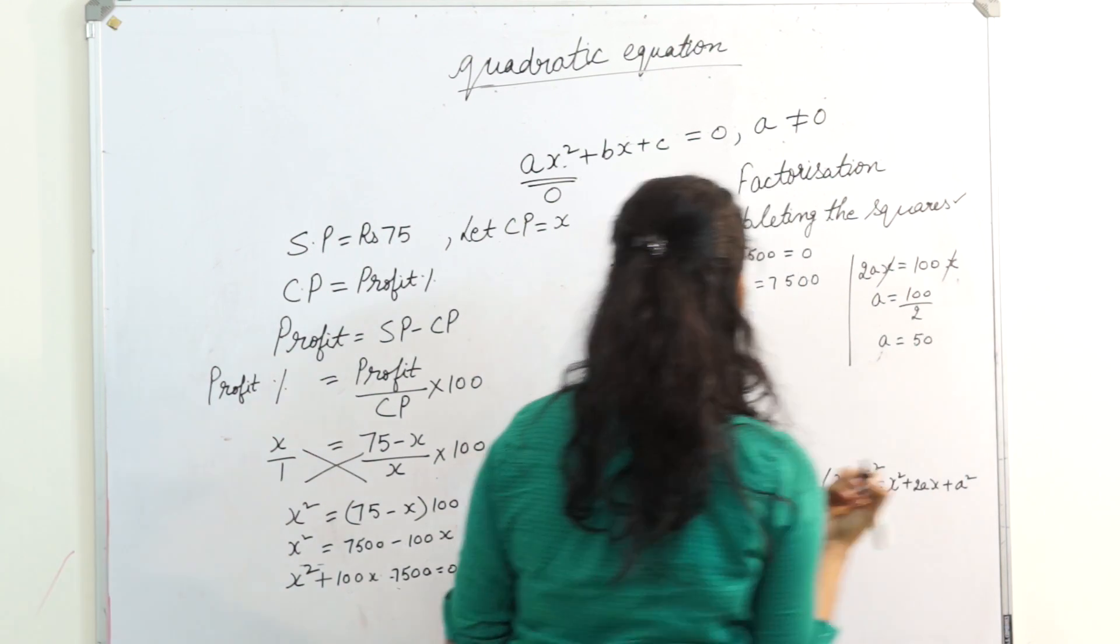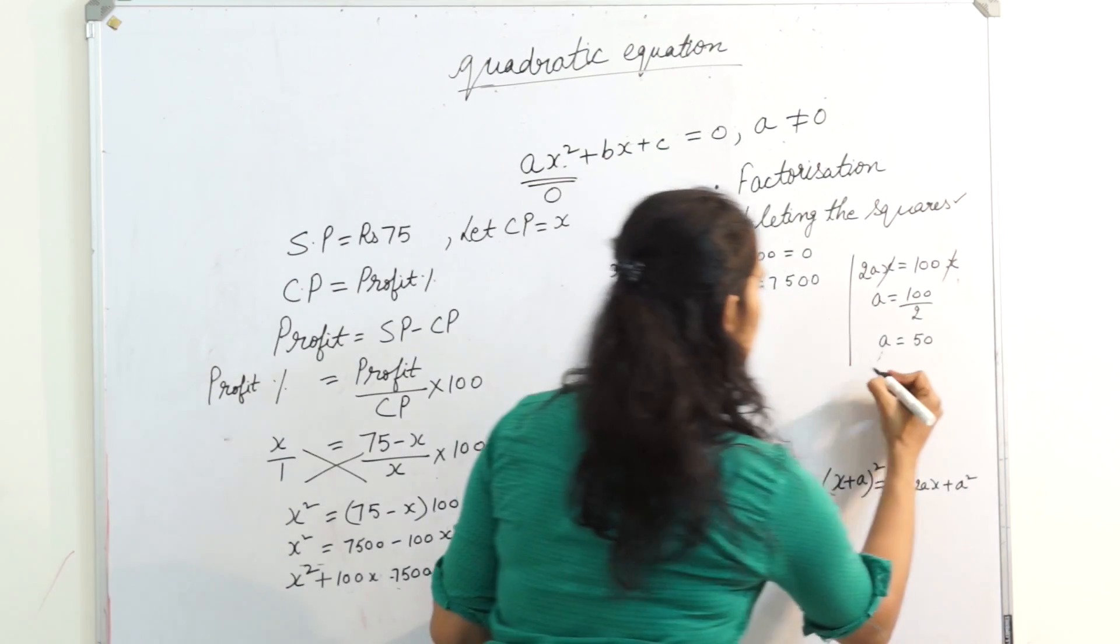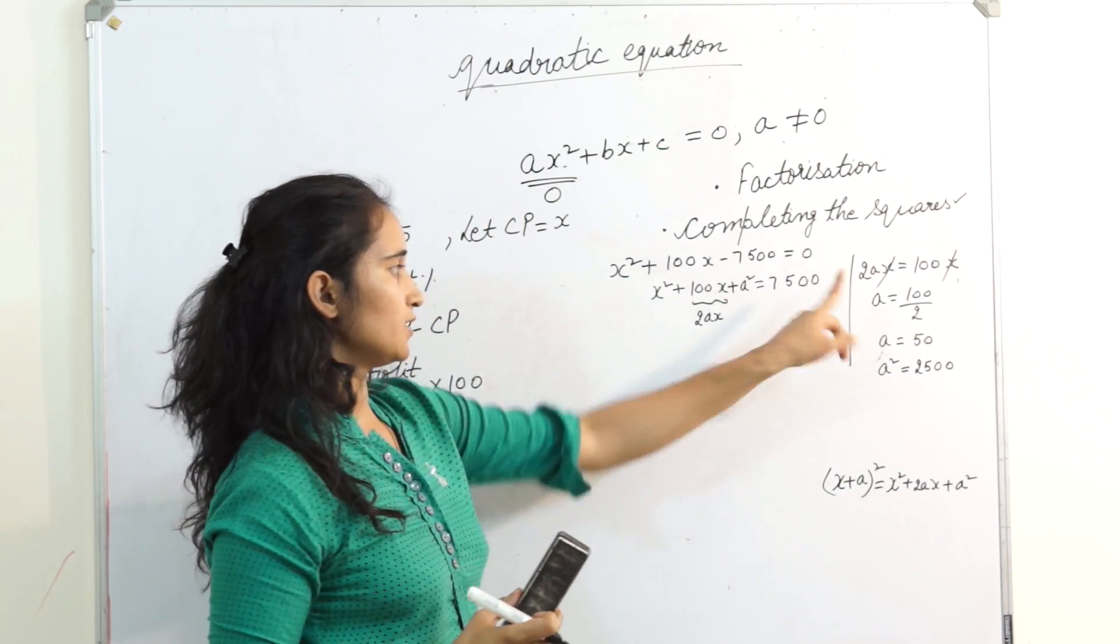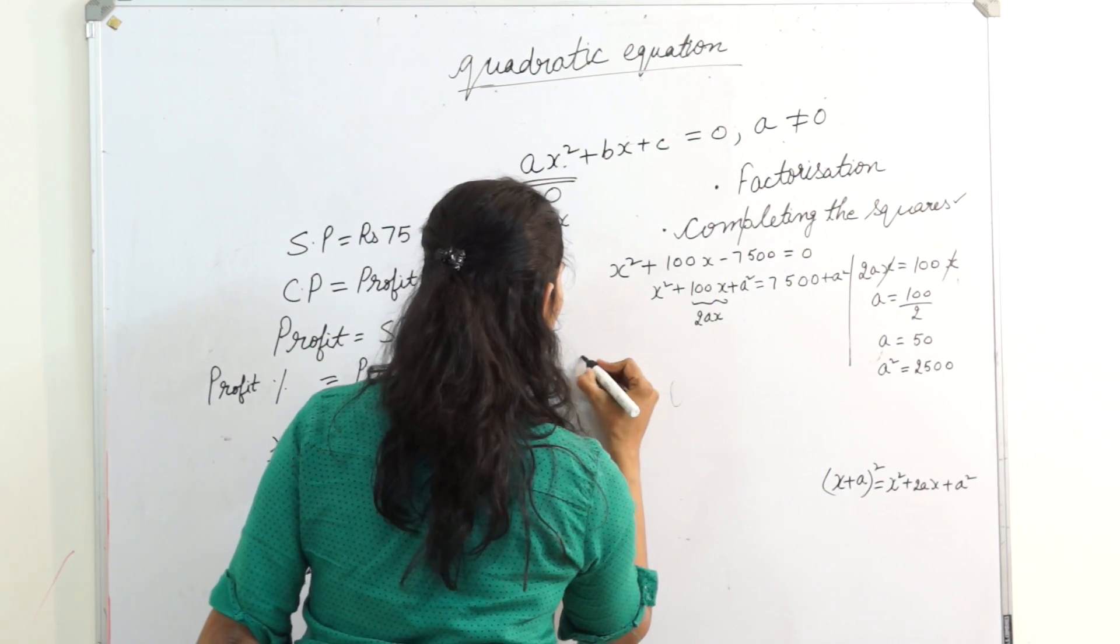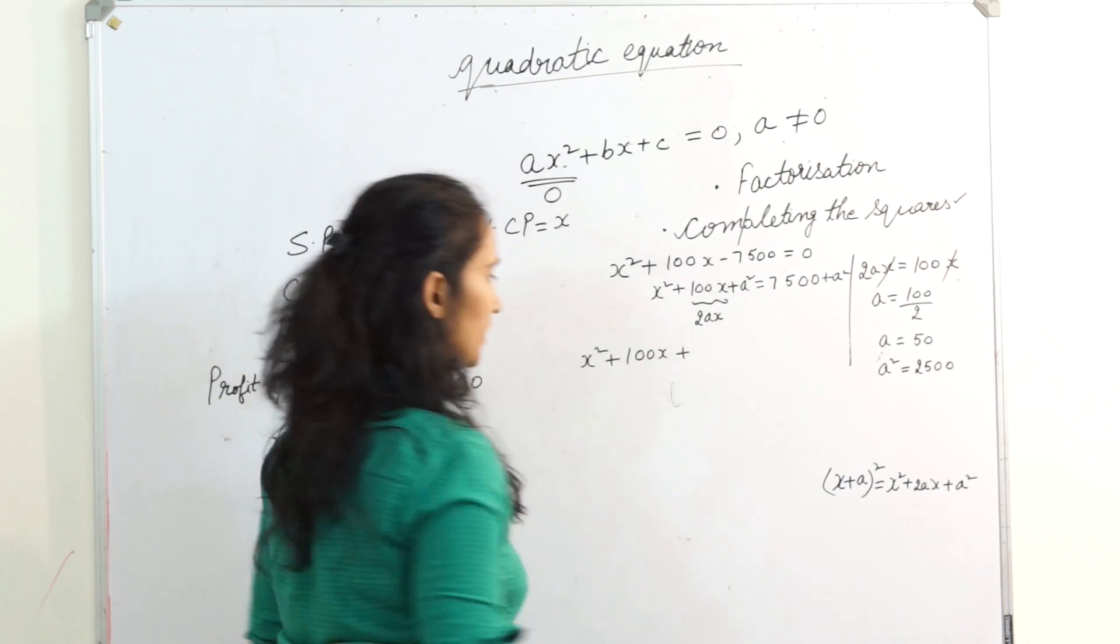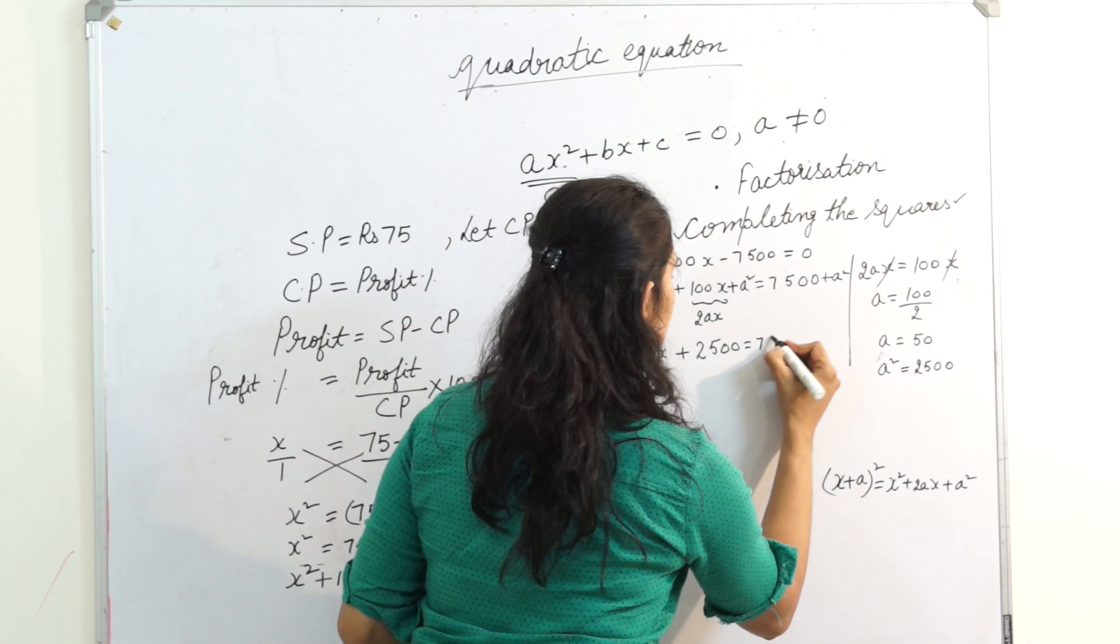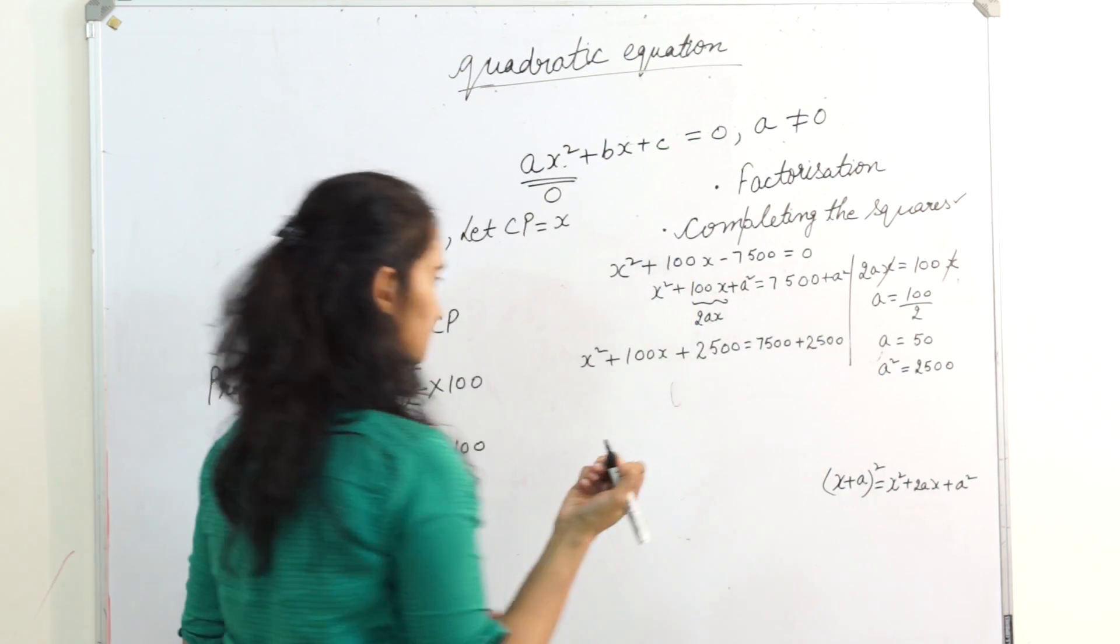But here I want a square. What is the a square? 2,500. If I am adding a square here, it's mandatory to add the same term on the other side. So plus a square. x square plus 100x, what is my a square? 2,500 equals 7,500 plus 2,500.